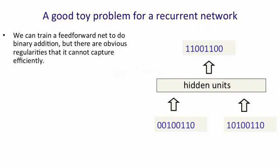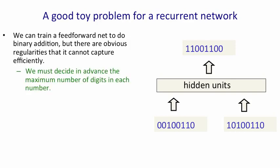But there's problems with using a feedforward neural network. We have to decide in advance what the maximum number of digits is for both of the input numbers and for the output number.